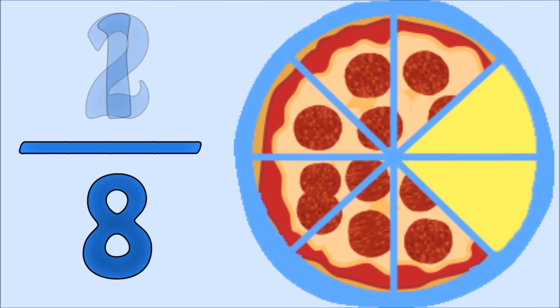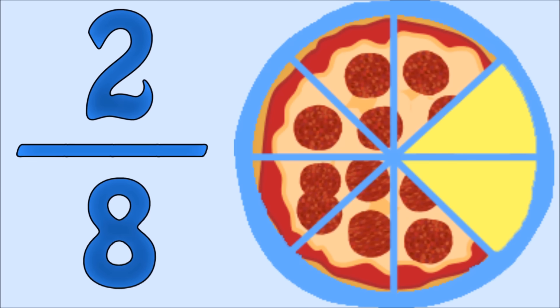If you normally eat two slices of pizza, then two would be the numerator. The denominator would still be eight, since there are always eight slices of pizza. That would mean that you eat two-eighths of a pizza.